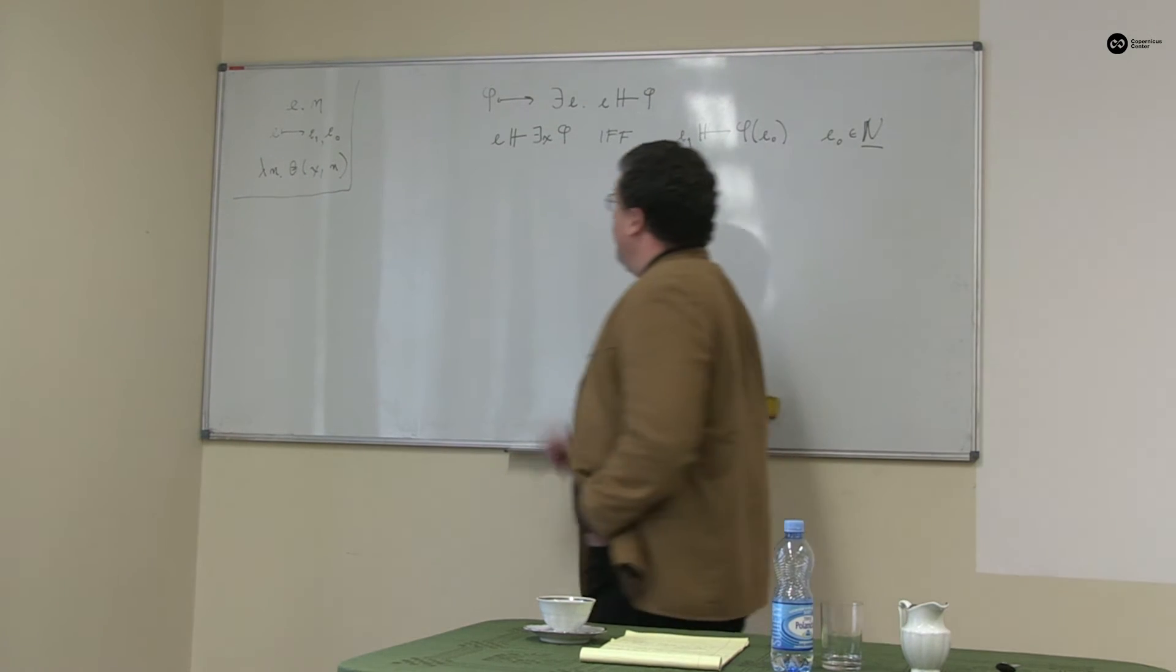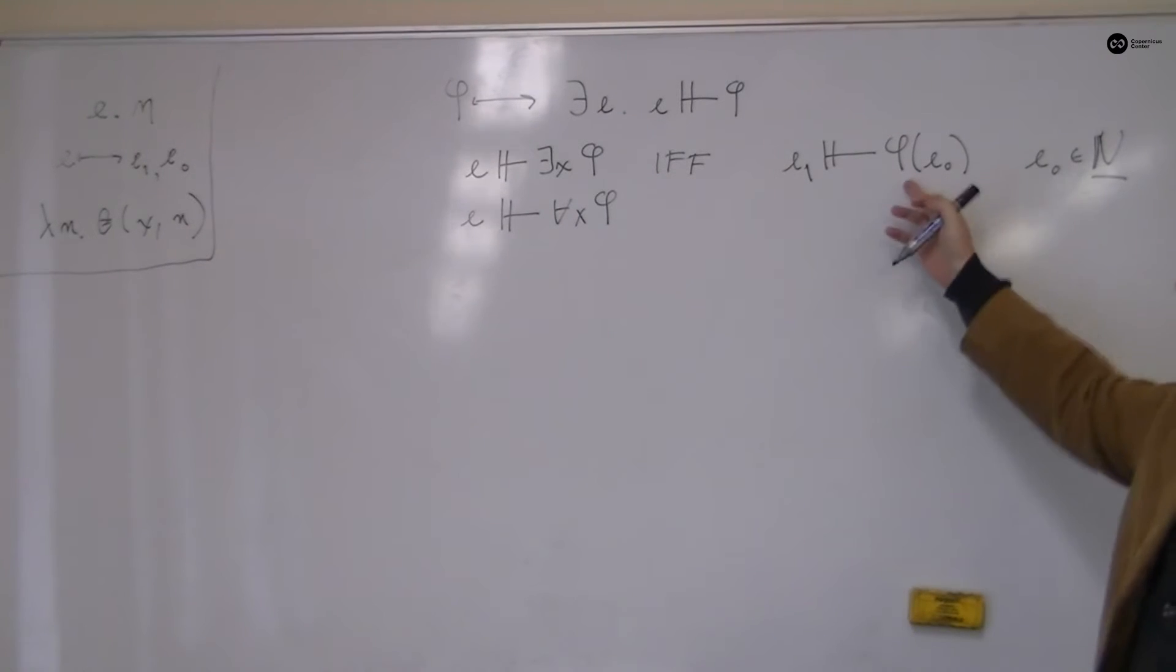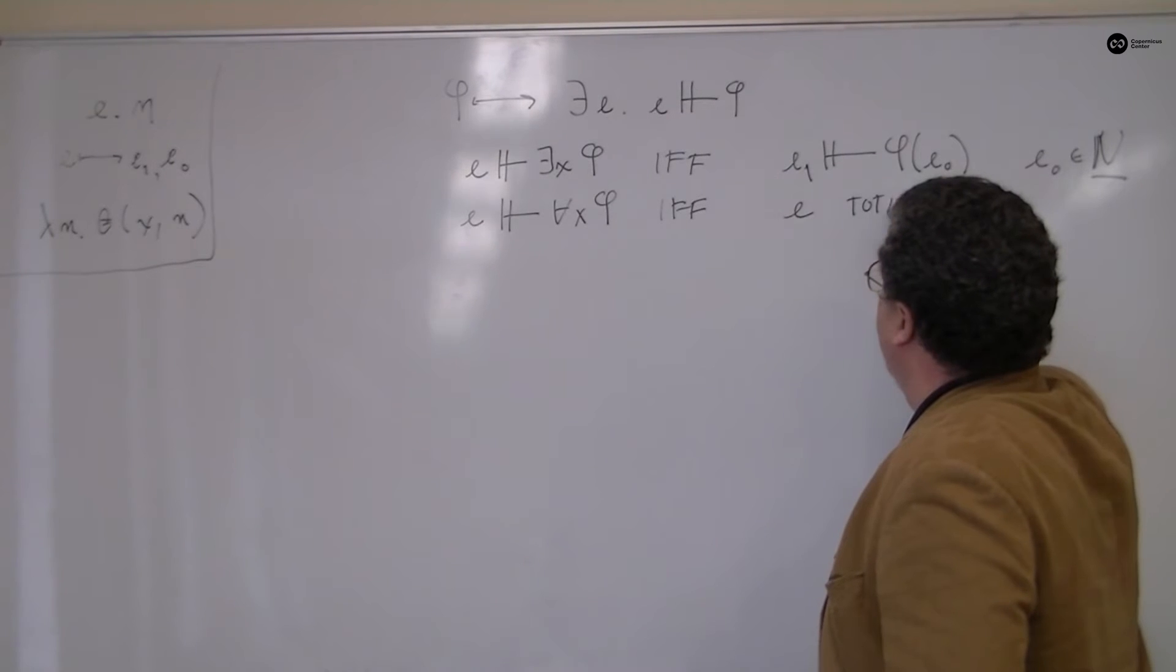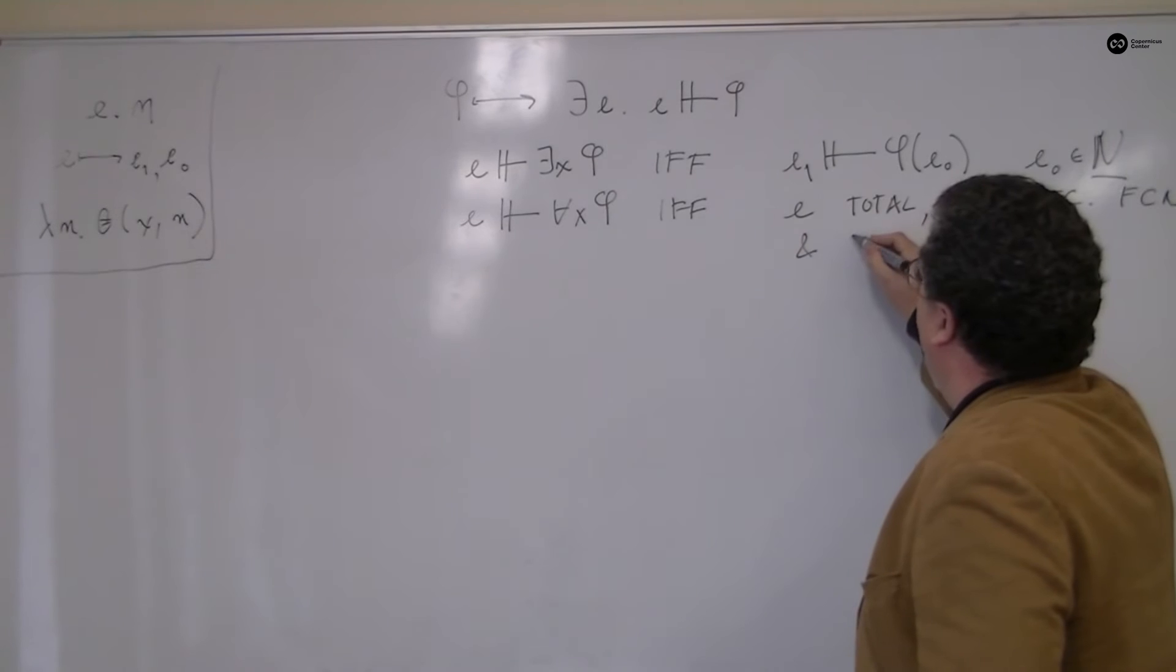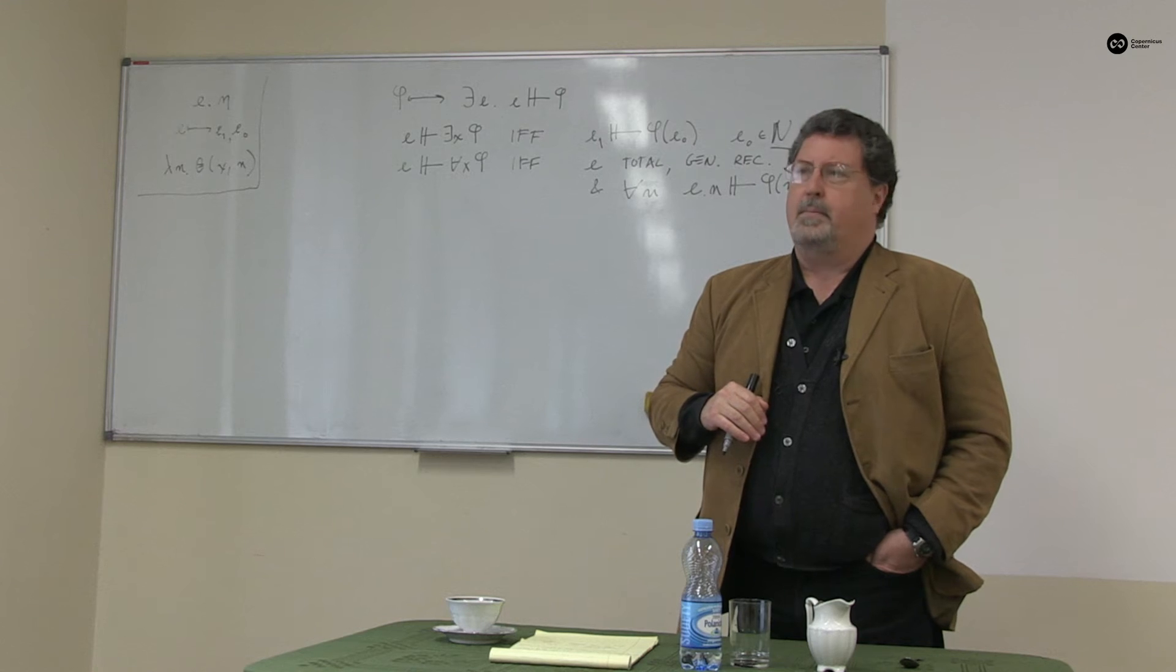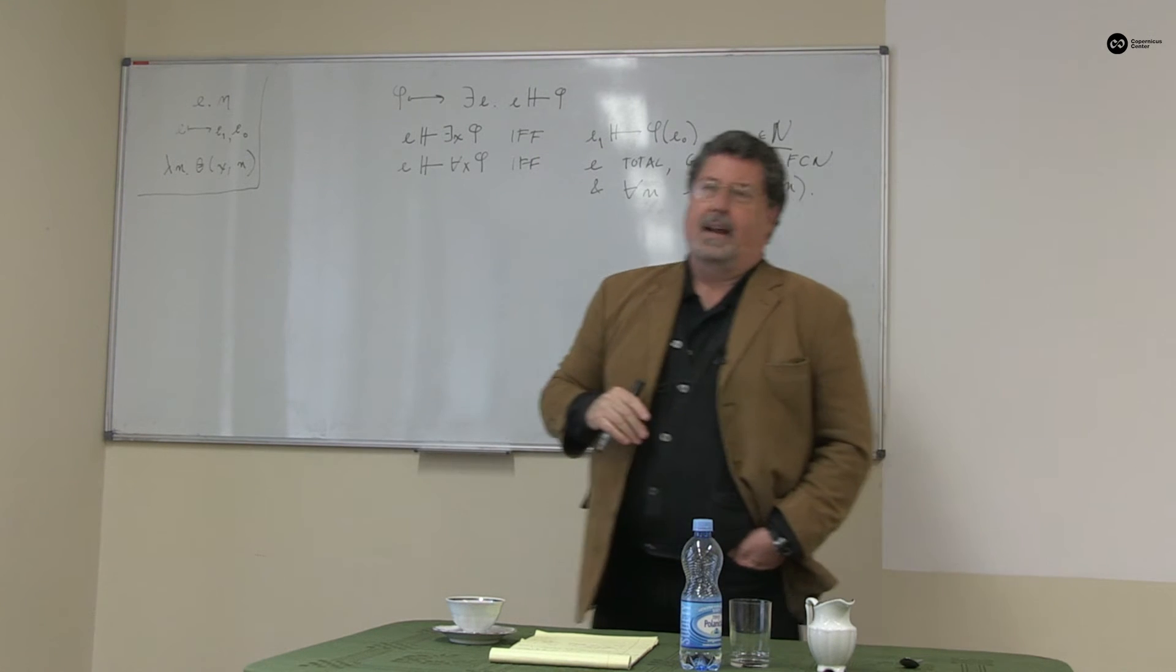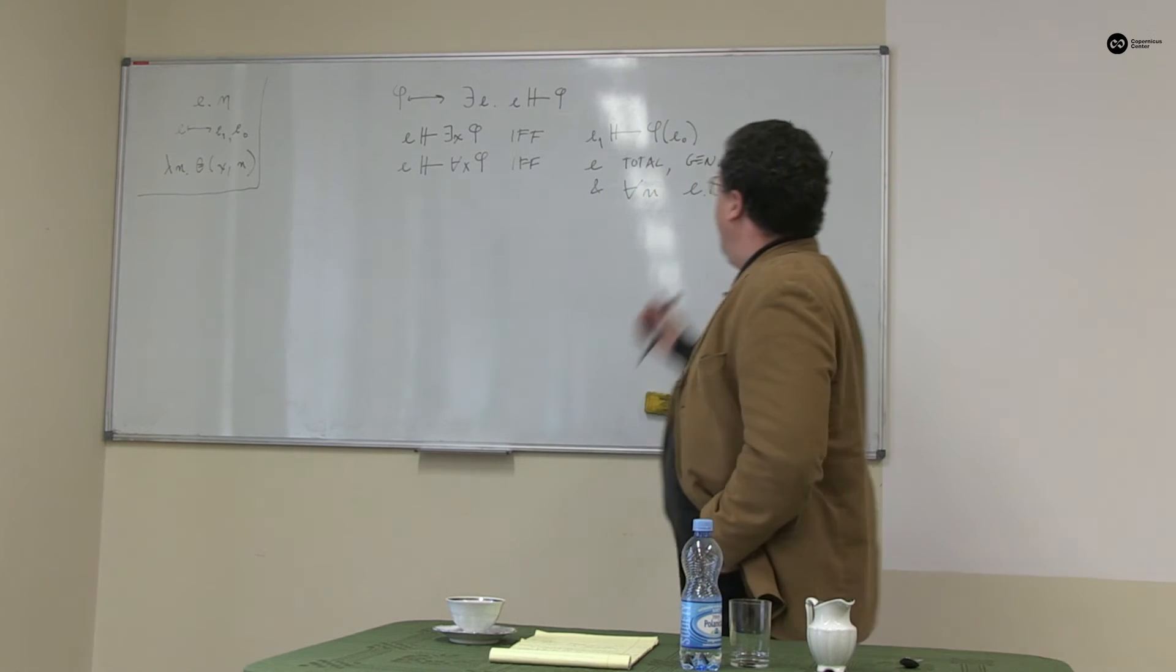And then secondly, e encodes a construction of a universal claim about natural numbers. By the way, I intend phi here to hold with respect to parameters and not just sentences. If and only if we think of e as encoding a total general recursive function. And for all natural numbers n, if I apply e to n, I get a construction for phi of n. This is an idea that you find in some of the later papers of David Hilbert, for example, when he explains what it is for such a statement to be true in a finitistic fashion. That is, that there is a procedure available on the basis of which I can enumerate proofs, finitistic proofs of phi, applied to each natural number n.